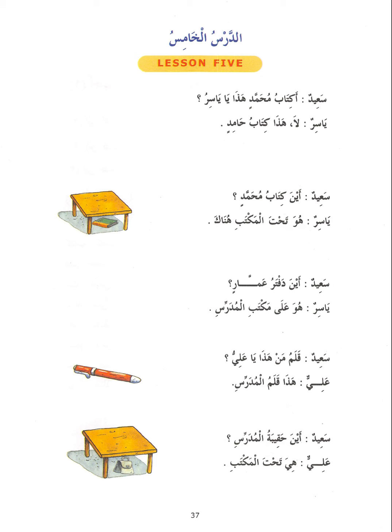The mudhaafun ilayh can sometimes be a nakira and it can sometimes be a ma'rifah. Therefore, it can sometimes have tanwin and sometimes have al — for example, Kitabu al-imami or Kitabu Muhammadin. However, the mudhaaf is always a ma'rifah, and since it's a ma'rifah, it doesn't need al. So you don't say Al-Kitabu Muhammadin, because Kitabu in this context, being a mudhaaf, is always a ma'rifah.